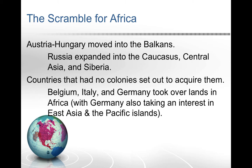Some countries like Belgium, Italy, and Germany took over smaller territories in Africa. Germany also took an interest in East Asia and the Pacific Islands. Here is a map of Africa showing the two independent nations in white — the one you really need to know is Ethiopia, which had one of the only successful rebellions against a European country to keep its independence.